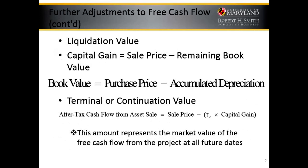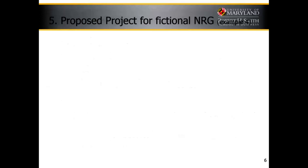A couple of things to think about: at the end of a project's life, we're going to have either a capital gain or loss, and we have a liquidation value. We can sell the machine if there's any remaining market value, minus the remaining book value, and there will be a capital gain. The IRS will tax that capital gain, and we look at sales proceeds minus the tax rate times the capital gain. That will be the market value of the free cash flow from the project.